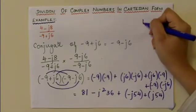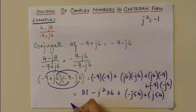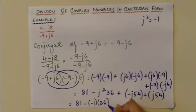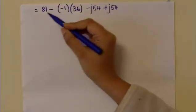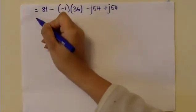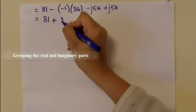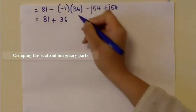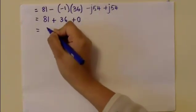We already know that j² = -1. Substituting that value, we have 81 - (-1)(36) - j54 + j54. Simplifying: 81 + 36 = 117, and the -j54 + j54 terms cancel to zero. So the denominator simplifies to 117.